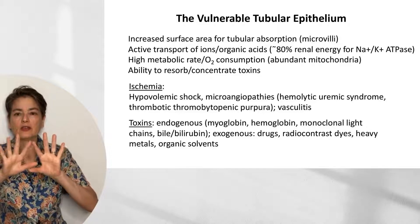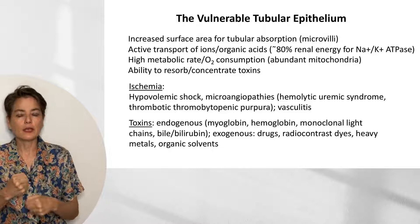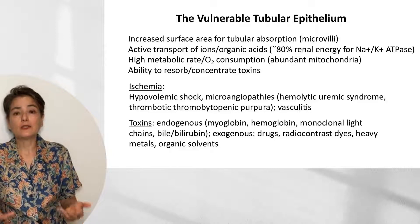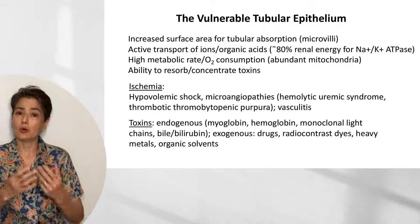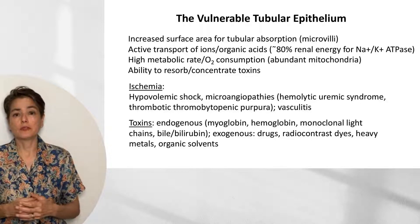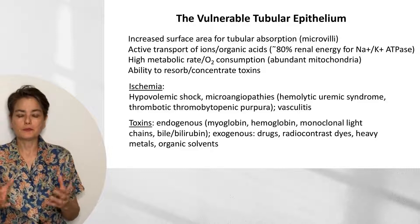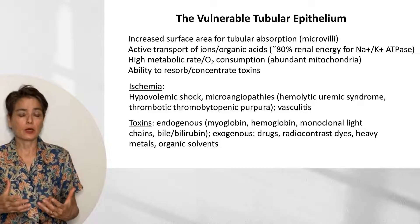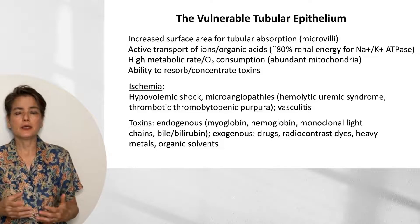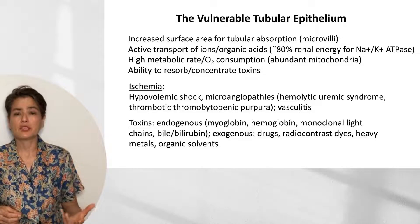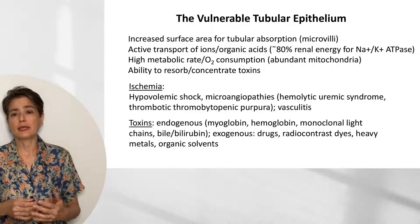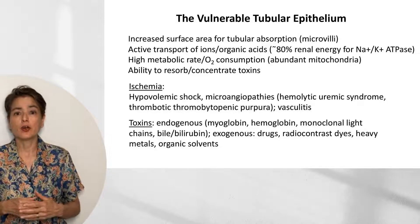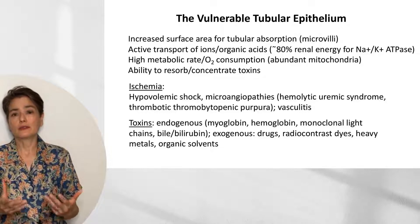With that large surface area comes exposure to toxins. They are actively working, using a lot of oxygen, with a high metabolic rate and lots of mitochondria. And their job is to resorb and concentrate toxins — so if you give them a big bolus of toxins, you can expect them to be vulnerable. The two principal insults to tubular epithelium are ischemia and toxins, with ischemia being much more common. We see it in hypovolemic shock, sepsis with peripheral vasodilation, microangiopathies like hemolytic uremic syndrome, thrombotic thrombocytopenic purpura, or vasculitis affecting the kidney.